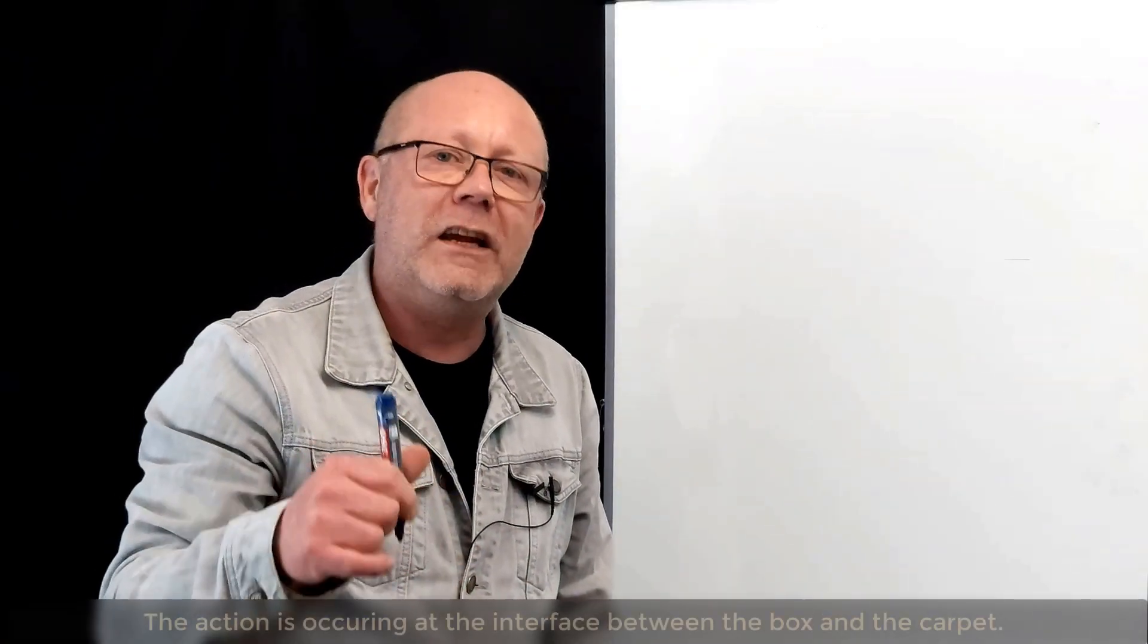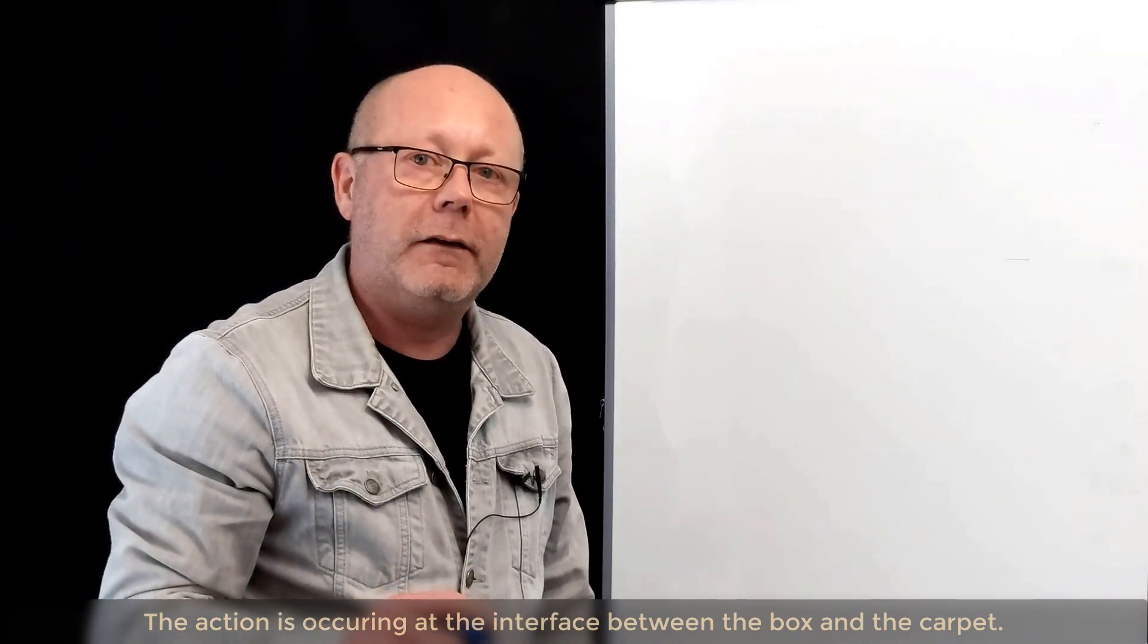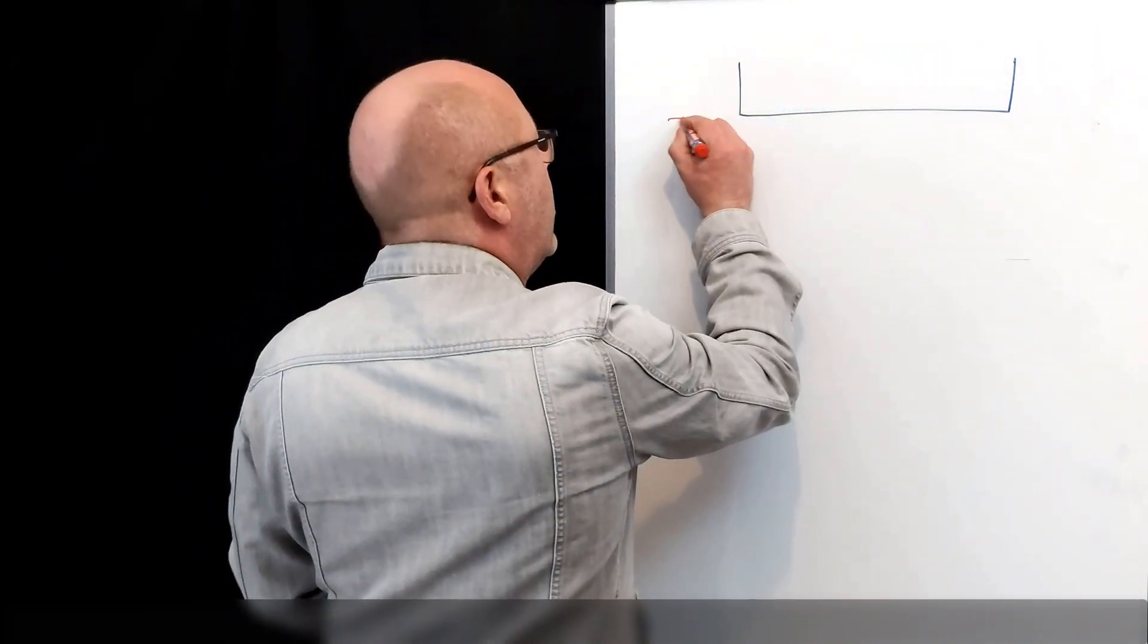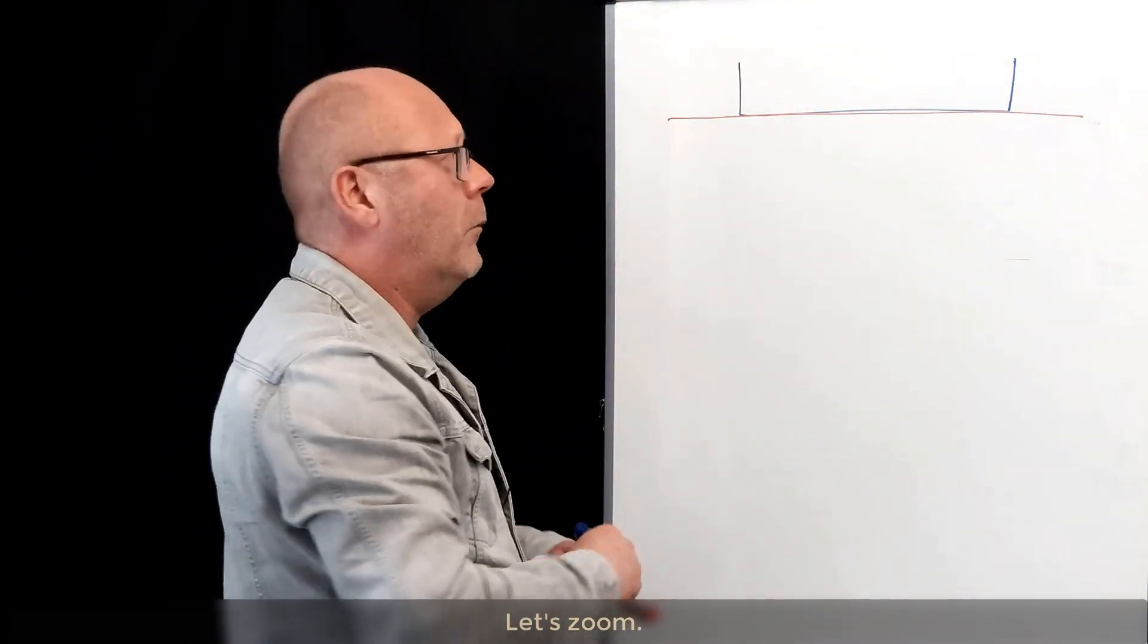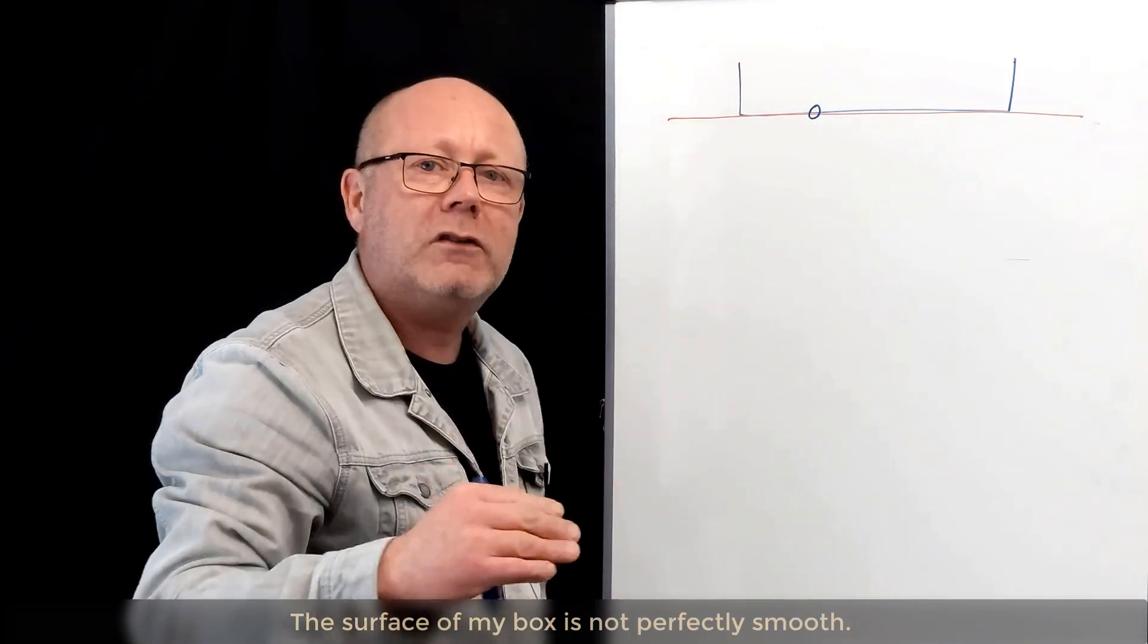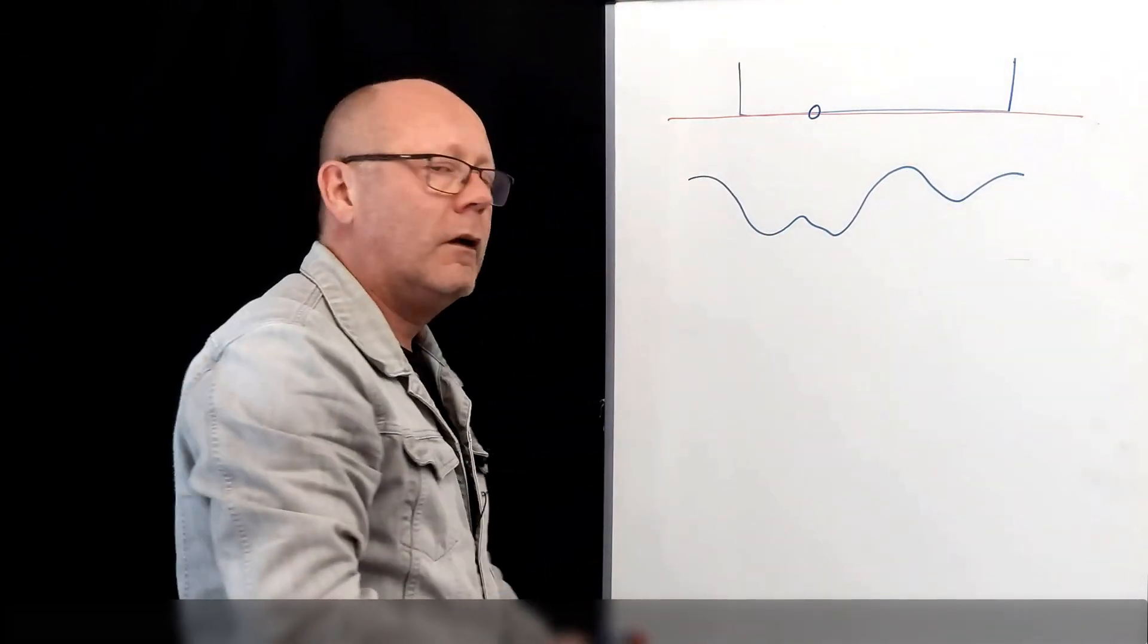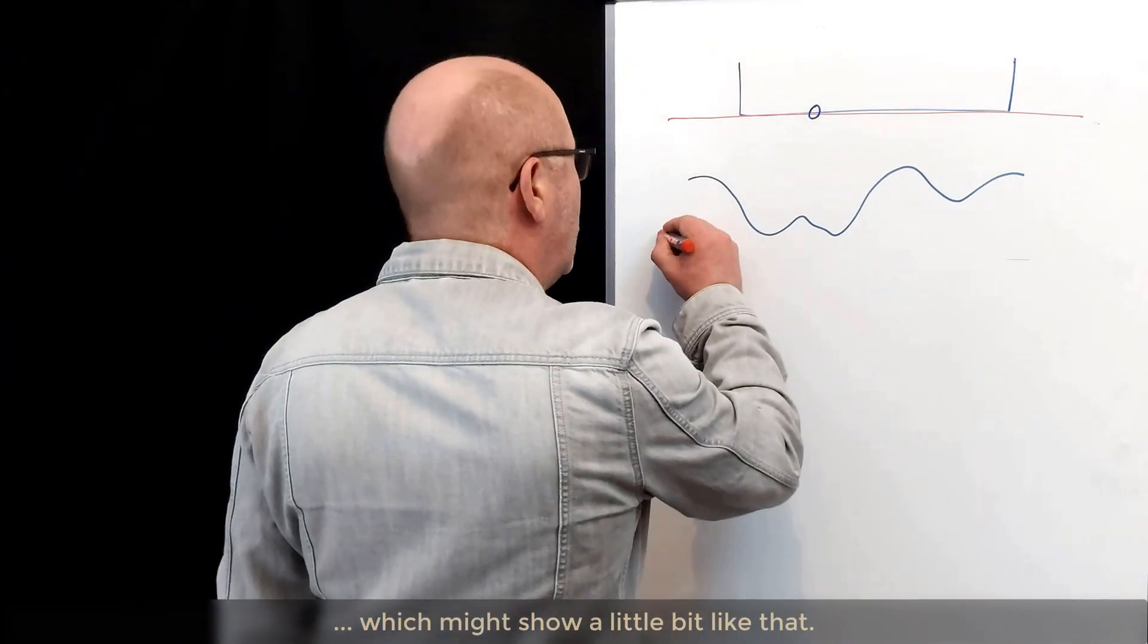The action is actually occurring at the interface between the box and the carpet. I'm representing the bottom of the box and here I'm representing the carpet. Let's zoom, right? I'm going to zoom on this point. The surface of my box is not perfectly smooth, so it will show up a bit like this maybe if I zoom. The surface of my room, neither will be the surface of my carpet, which might show a little bit like that.